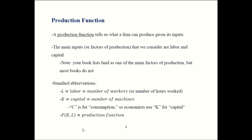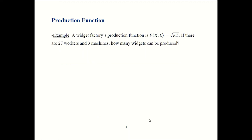The production function is going to be a function of K and L — how much you can produce depends upon how much capital and how many workers you have. Here's an example: let's say the firm's production function is the square root of K times L. If the factory has 27 workers and three machines, how many widgets can it make? Pause the video here while you think about that.